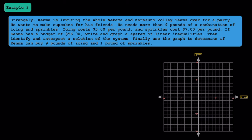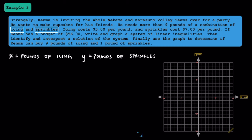In example 3, let's take a look at an application word problem. Kenma is inviting the whole Nekama and Karasuno volleyball teams over for a party and wants to make cupcakes. He needs more than 9 pounds of a combination of icing and sprinkles. Icing costs 5 dollars per pound and sprinkles costs 7 dollars per pound. Kenma has a budget of 56 dollars. I'm going to let x represent the pounds of icing and y represent the pounds of sprinkles. For our first inequality: x plus y is greater than 9, meaning the total pounds of icing plus sprinkles has to be more than 9.